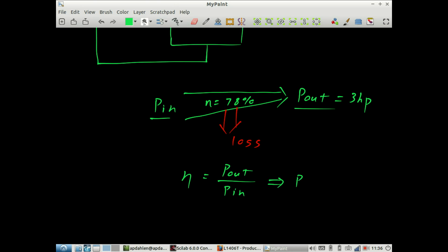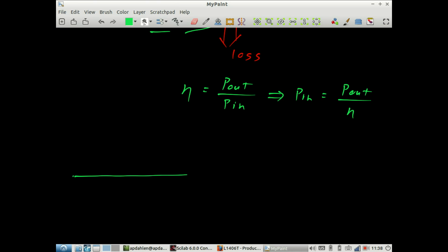It follows that the power in is equal to the power out divided by efficiency. The next step is to use the power triangle to organize our thoughts. Down here, we have real power, which is the power going into the motor, and we define that as the output power times 1 over efficiency.